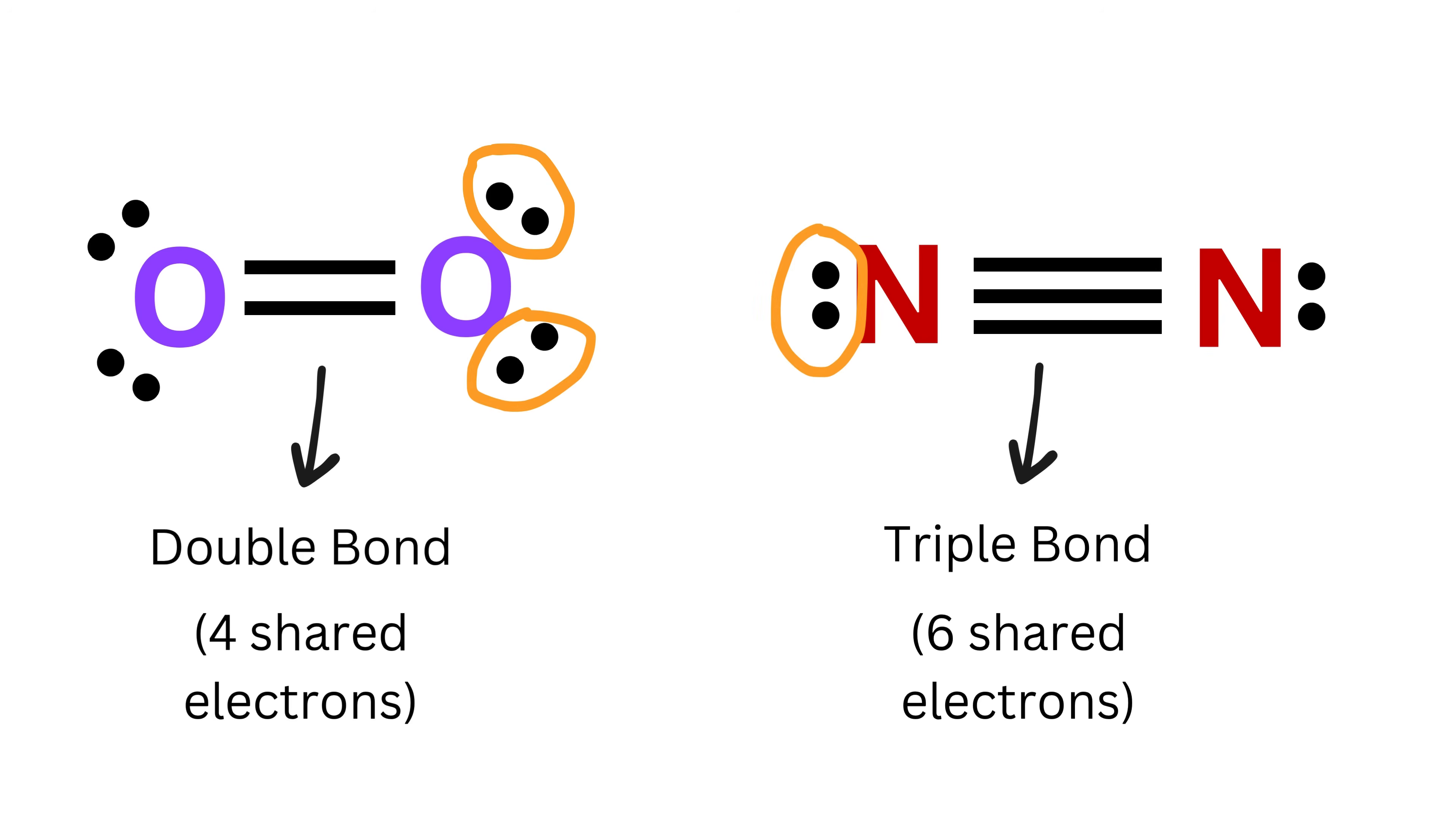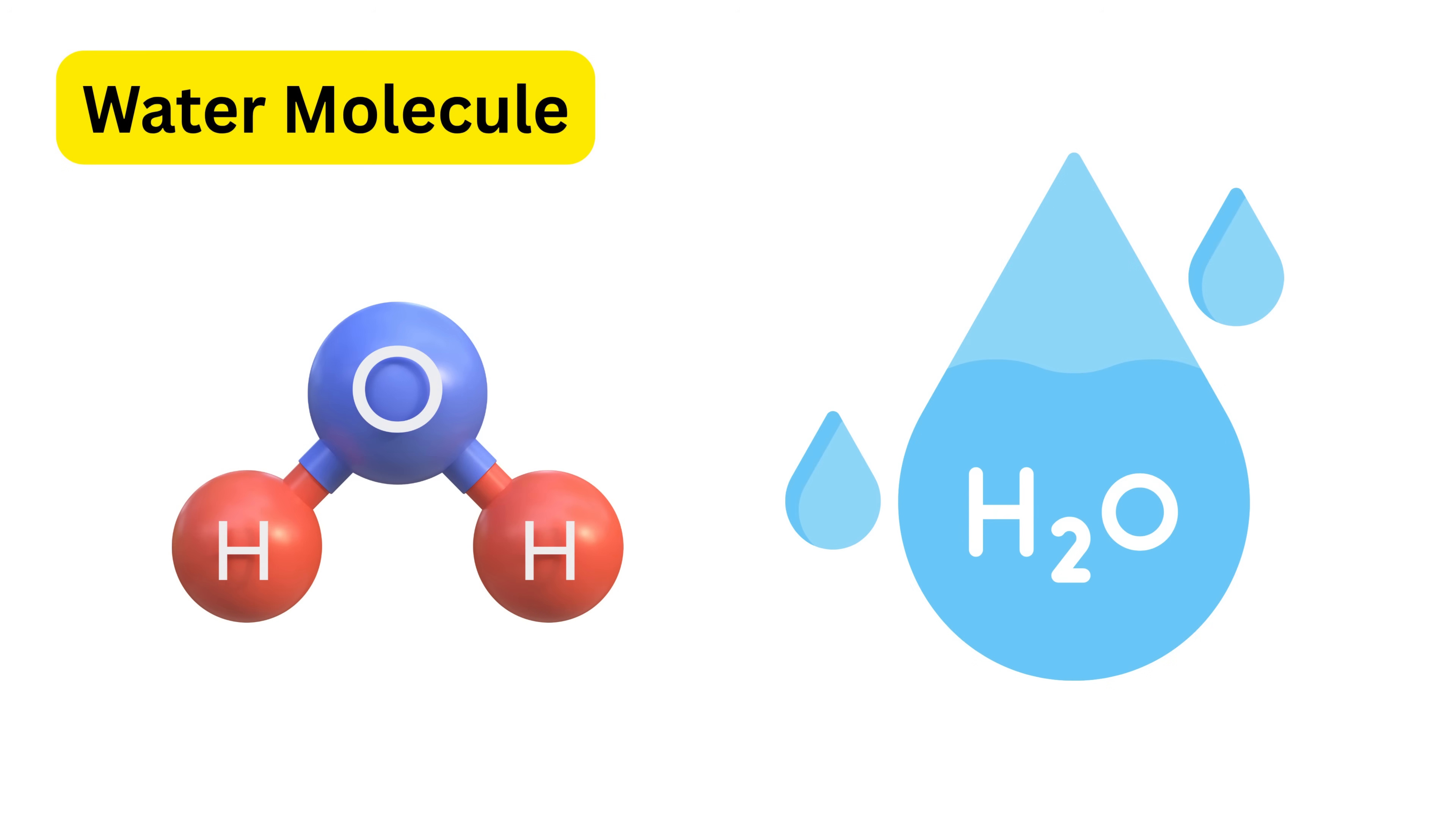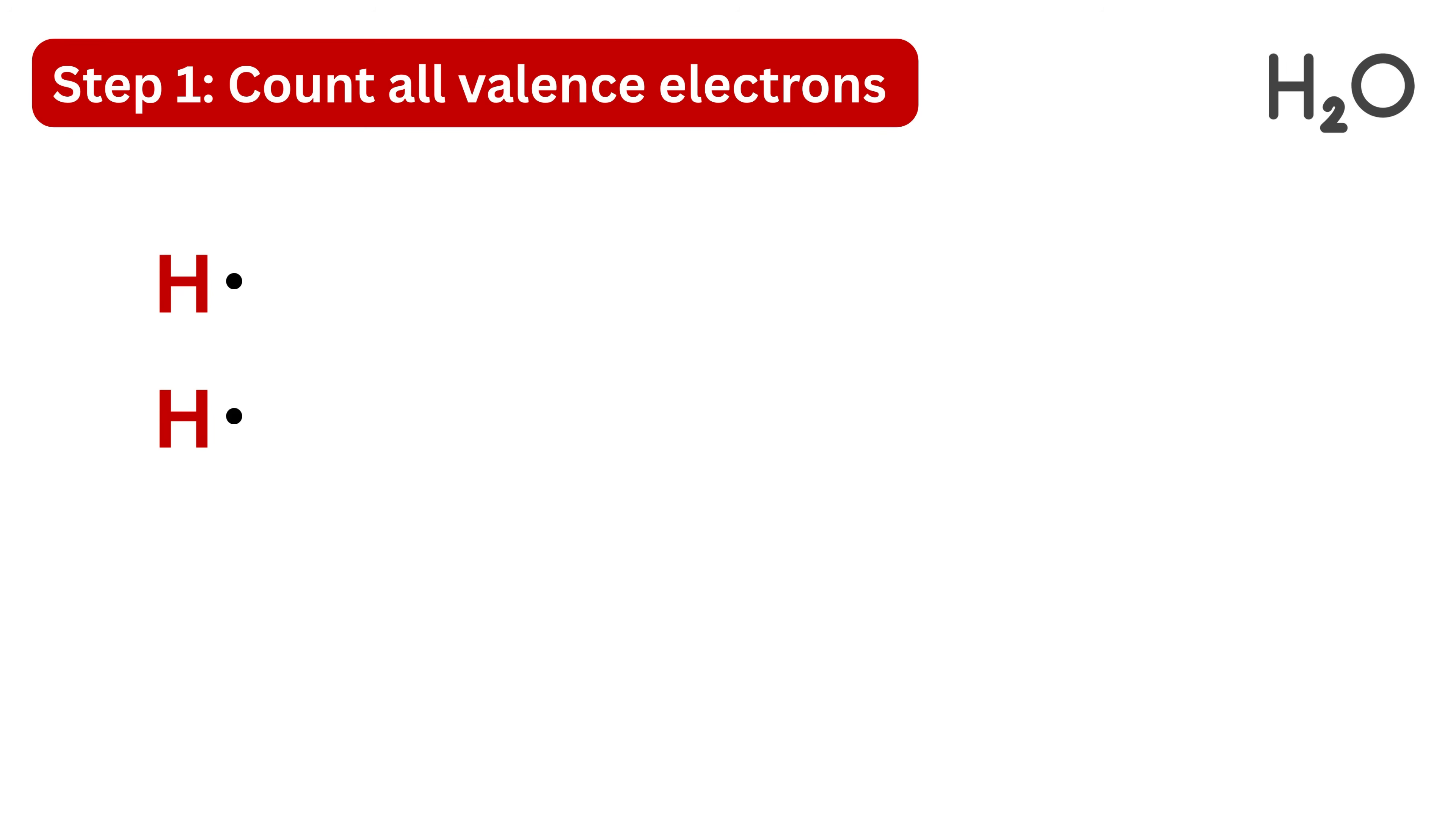Now let's learn the proper step-by-step process for drawing a Lewis diagram for any molecule. Let's start with a simple and very familiar molecule: water, written as H₂O. Step one is to count all the valence electrons. Each hydrogen atom has one valence electron, and since there are two hydrogens, that makes two electrons from hydrogen. Oxygen has six valence electrons. Add them: two from hydrogen plus six from oxygen gives a total of eight valence electrons. That's our total electron count—the number we'll use to draw our diagram.